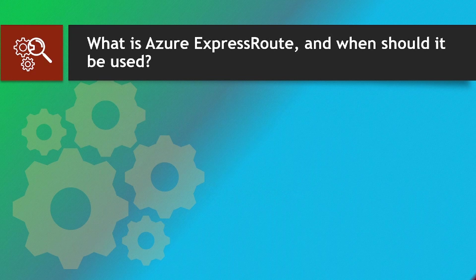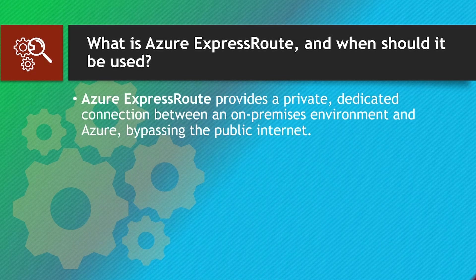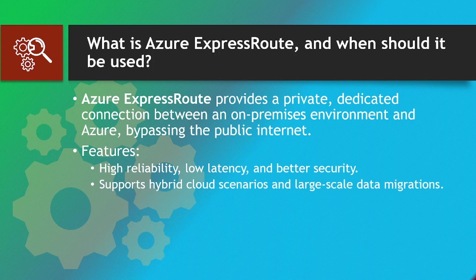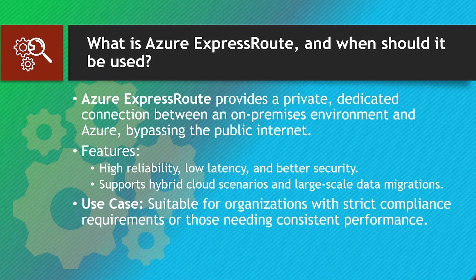What is Azure ExpressRoute and when should it be used? Azure ExpressRoute provides a private, dedicated connection between an on-premises environment and Azure, bypassing the public internet. Features: high reliability, low latency, and better security. Supports hybrid cloud scenarios and large-scale data migrations. Use case: suitable for organizations with strict compliance requirements or those needing consistent performance.